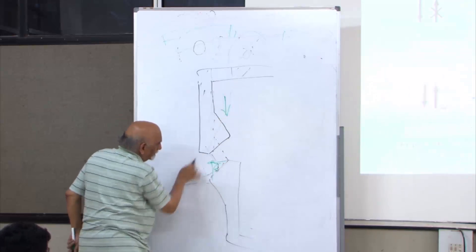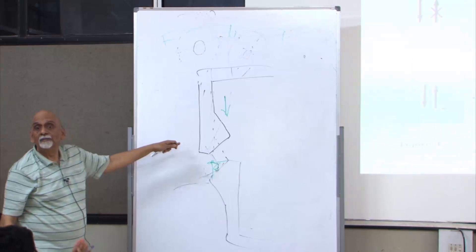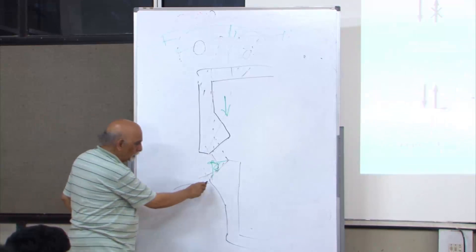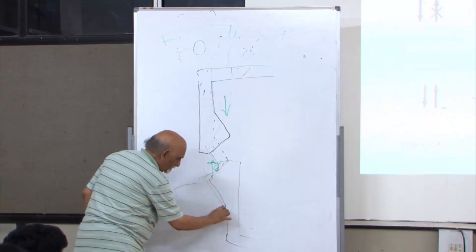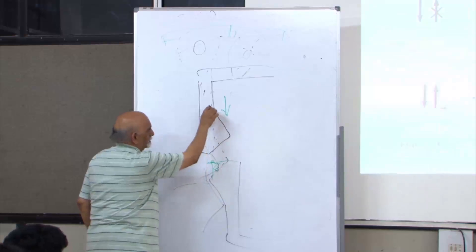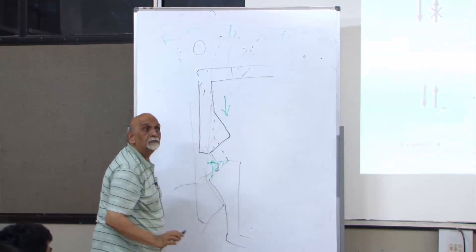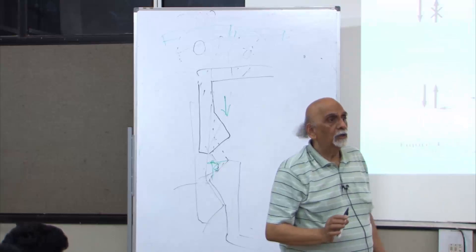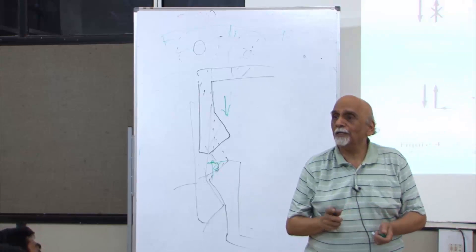It will become like this, and once it passes—when will you get maximum cos theta? At 45-degree angle. So what does that mean? It is F cos theta.